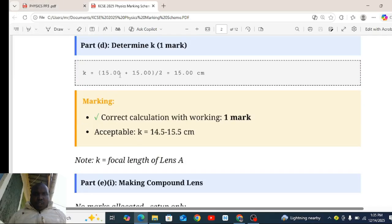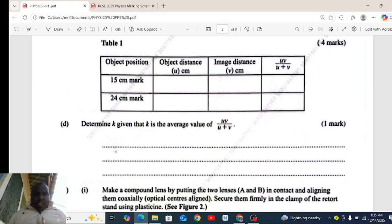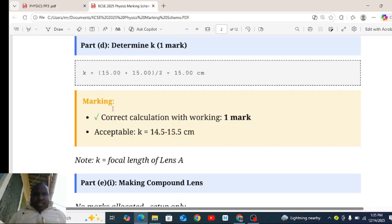The value of K, number D1D, is K equal to 15.00 plus 15.0 divided by 2, which is 15.00 centimeters.